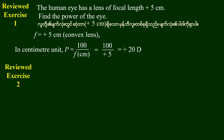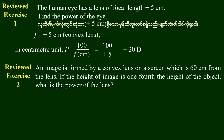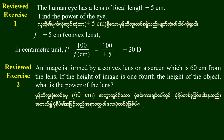Review Exercise 2: An image is formed by a convex lens on a screen which is 60 cm from the lens. If the height of the image is 1 and the height of the object is 4, what is the power of the lens? The image formed on the screen is a real image.